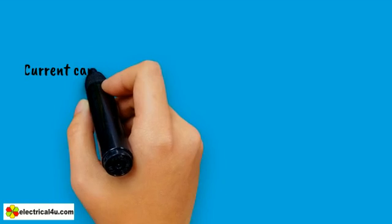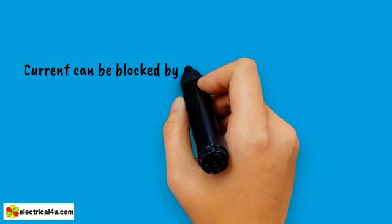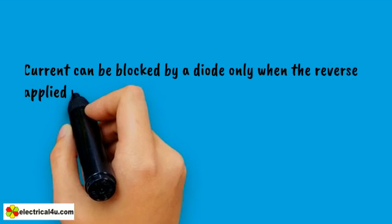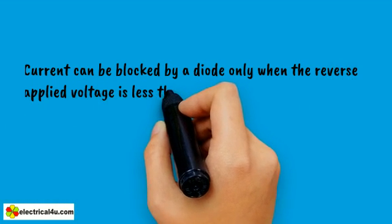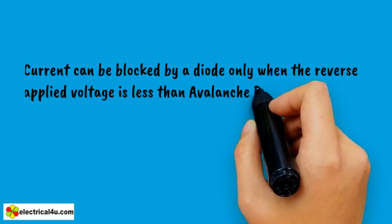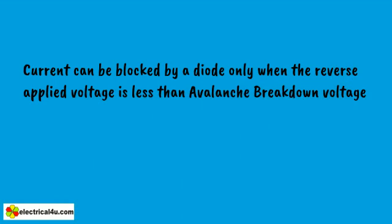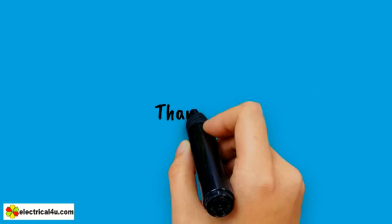That is why we already said the current can be blocked by a diode when the applied reverse voltage is less than a rated or specified voltage. This specified voltage is less than the voltage at which avalanche breakdown occurs. This is the basic theory of diode. Thank you.